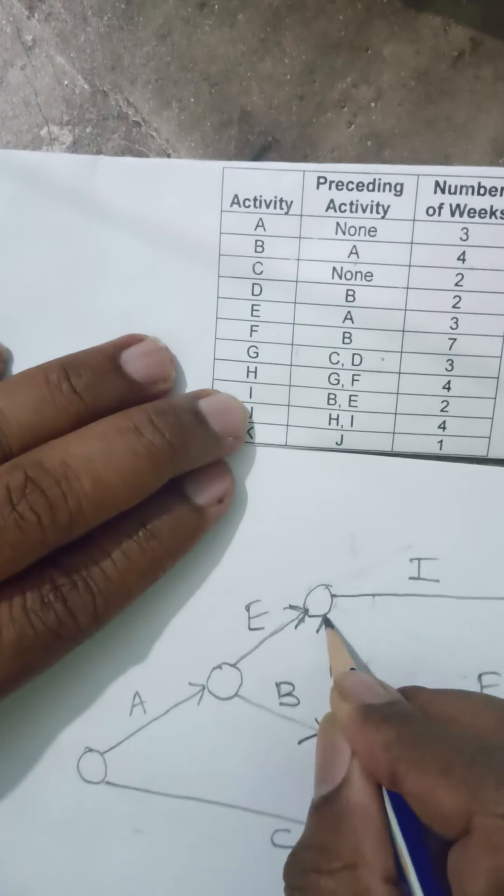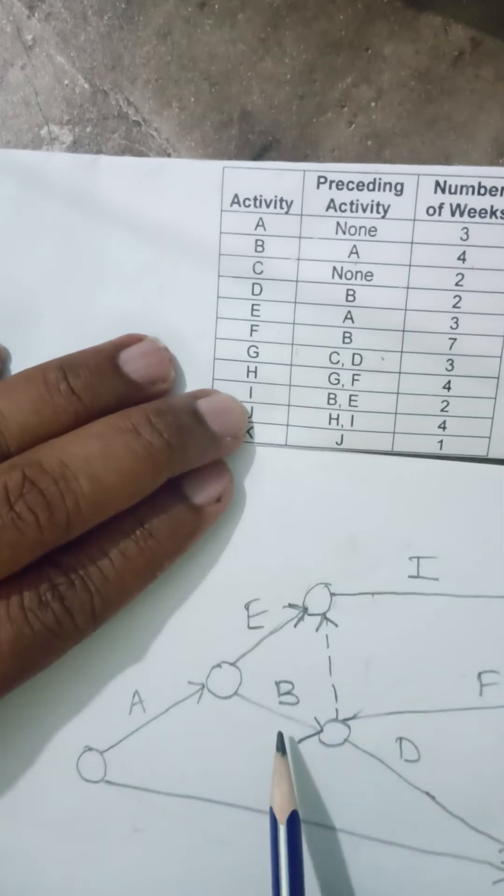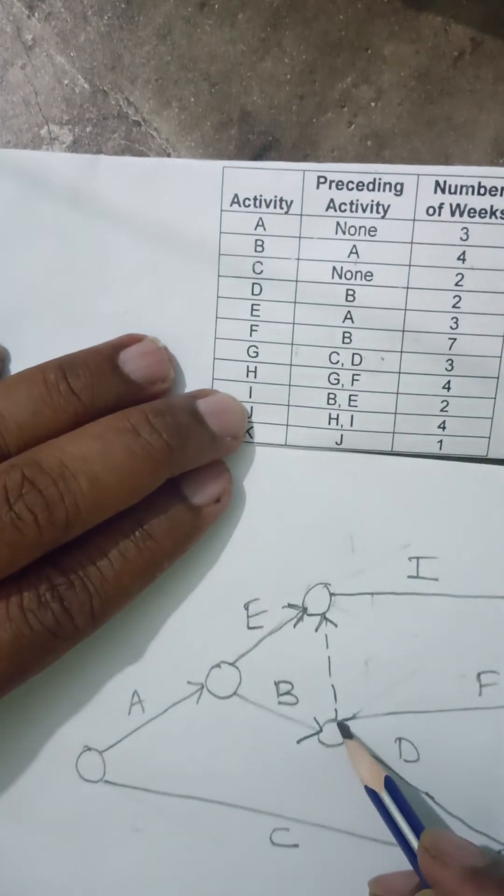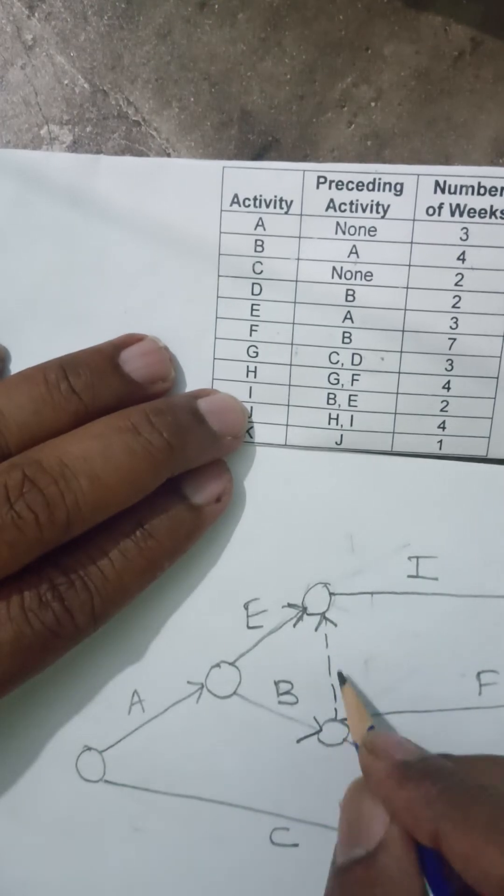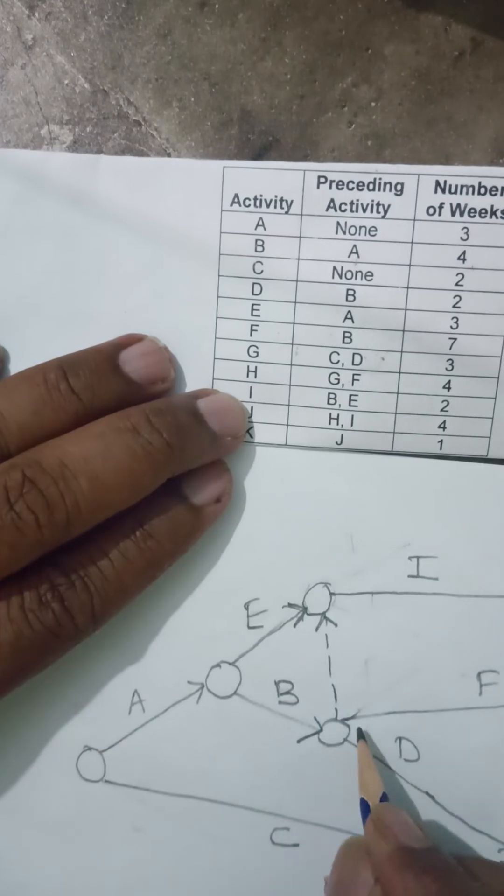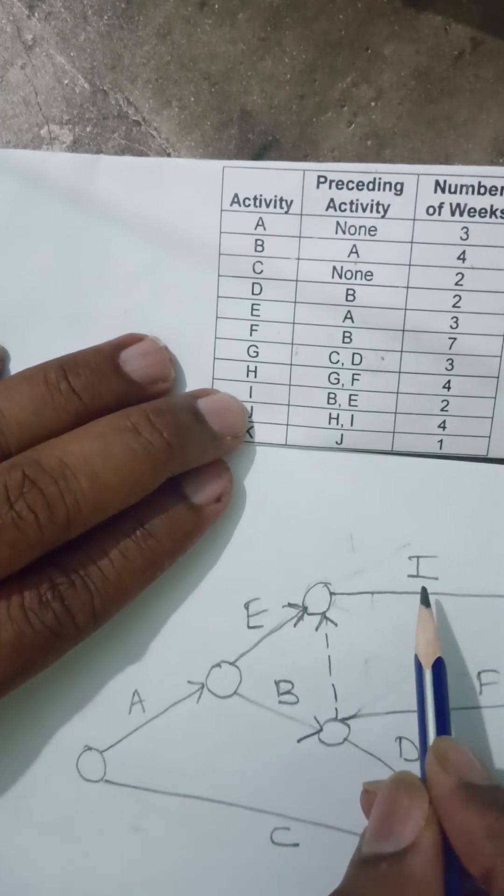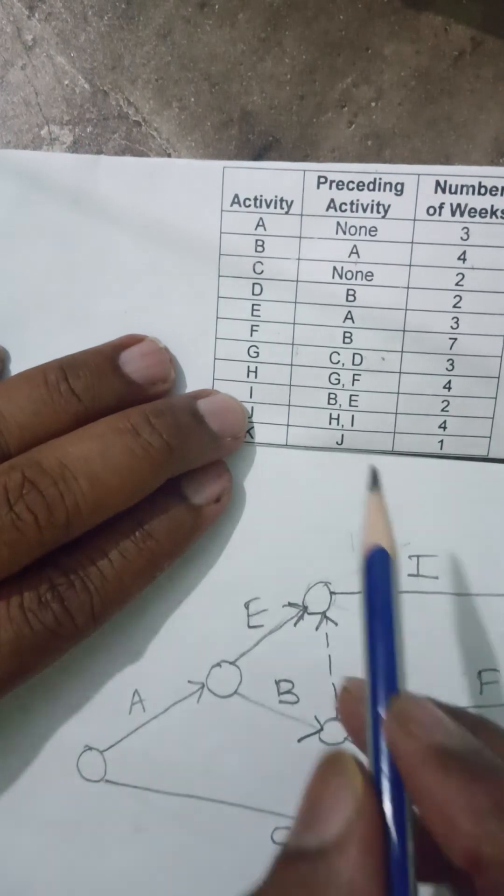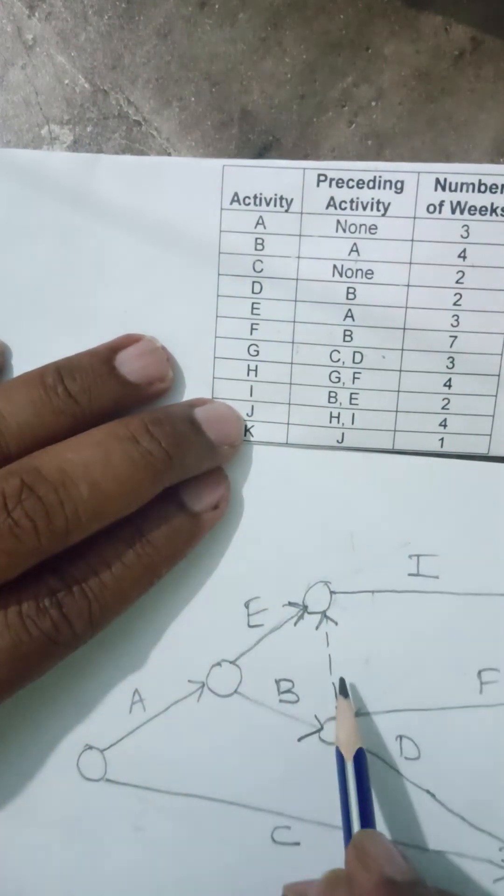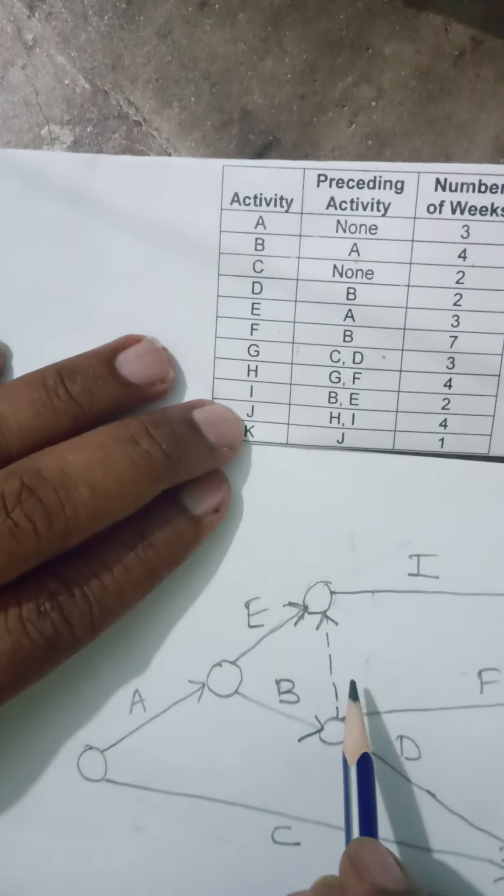For B and E both, I will show a dummy activity. Because there is no other way I can connect I and B. I cannot start from here because then E will remain separate. Now this dummy activity is a must here because I requires E and B to finish. This is how the dummy activity comes into existence.